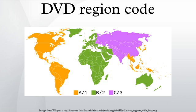The eight regions each correspond to a value which is a power of 2: region 1 corresponds to 1, region 2 to 2, region 3 to 4, and so on through region 8, which corresponds to 128. The values of each region that the disc is not encoded for are added together to give the value in the file. For example, a disc encoded for region 1 but not regions 2 through 8 will have the value 2+4+8+16+32+64+128 = 254. A disc encoded for regions 1, 2, and 4 will have the value 4+16+32+64+128 = 244. A region-free or RCE-protected DVD will carry the value 0, since no regions are excluded.